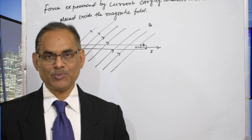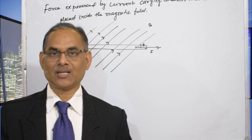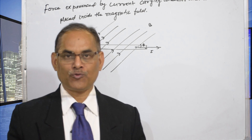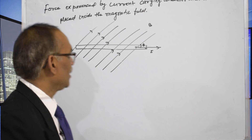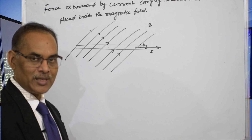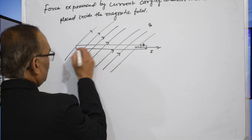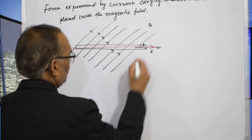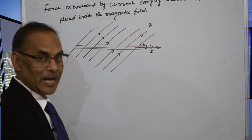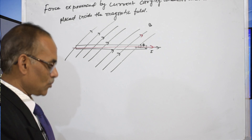Hello students. In this video we will learn about the force experienced by the current carrying conductor when it is placed in a uniform magnetic field. The current passes through the conductor and this conductor is placed in a uniform magnetic field. The current passes along the direction I, and B is the direction of the magnetic field. The angle between the magnetic field and current is equal to theta.